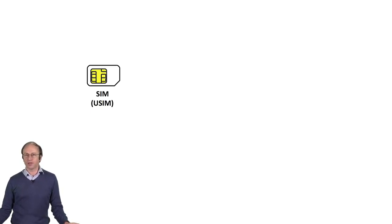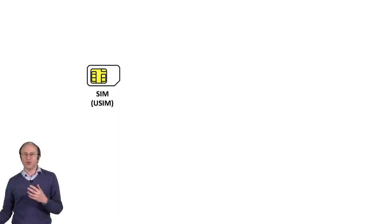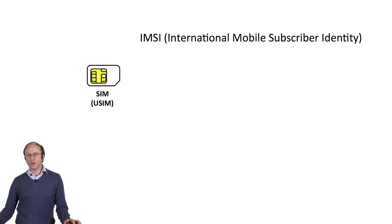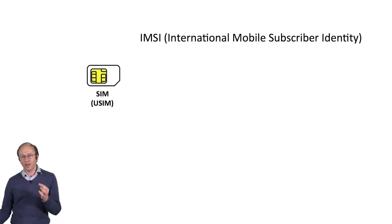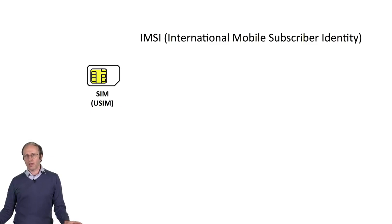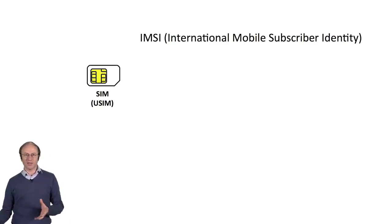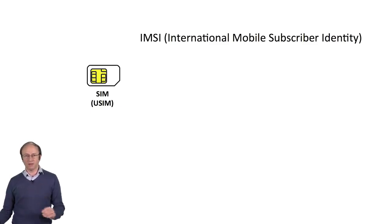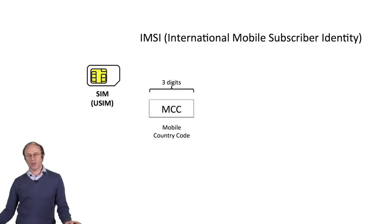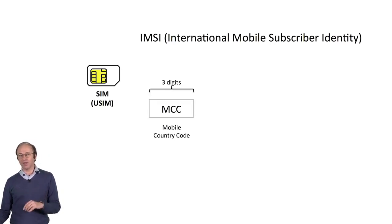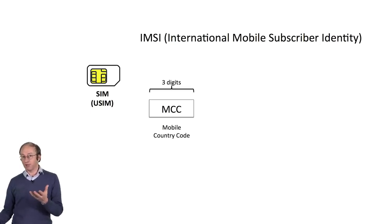It is obviously necessary to identify each SIM card or each subscription in a unique way. This is done using an identity called the International Mobile Subscriber Identity. To ensure that two random subscribers in the entire world never have the same IMSI, the structure is hierarchical. It starts with three digits indicating the MCC code, the mobile country code — the country where the user has subscribed, which is generally where he lives.